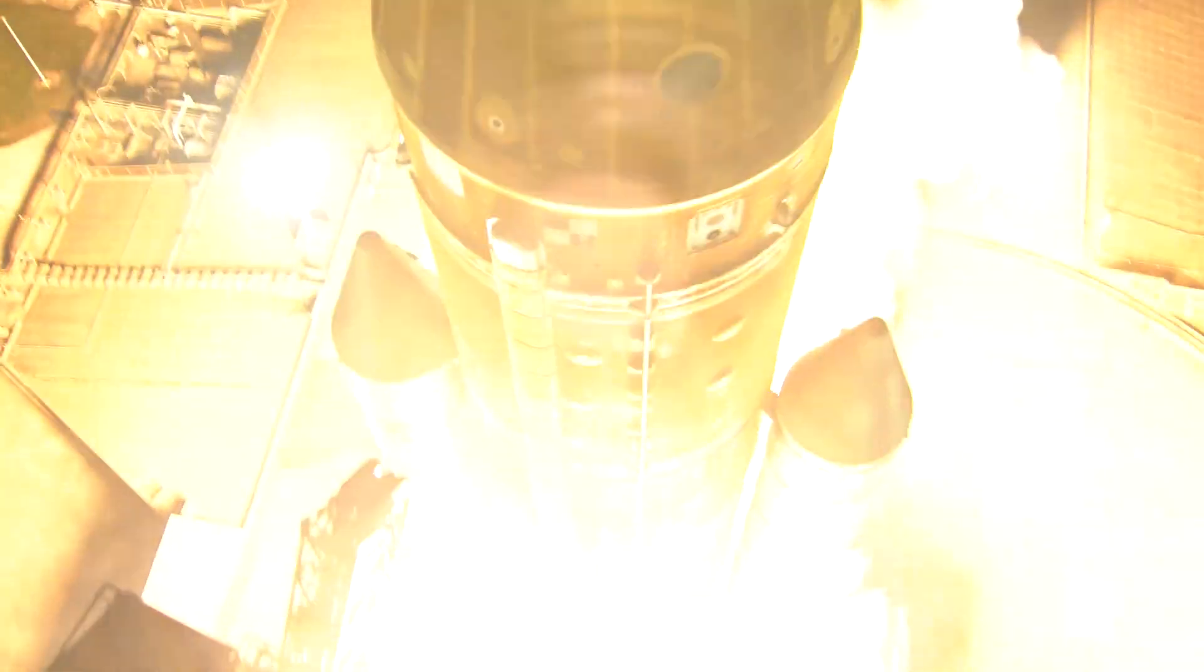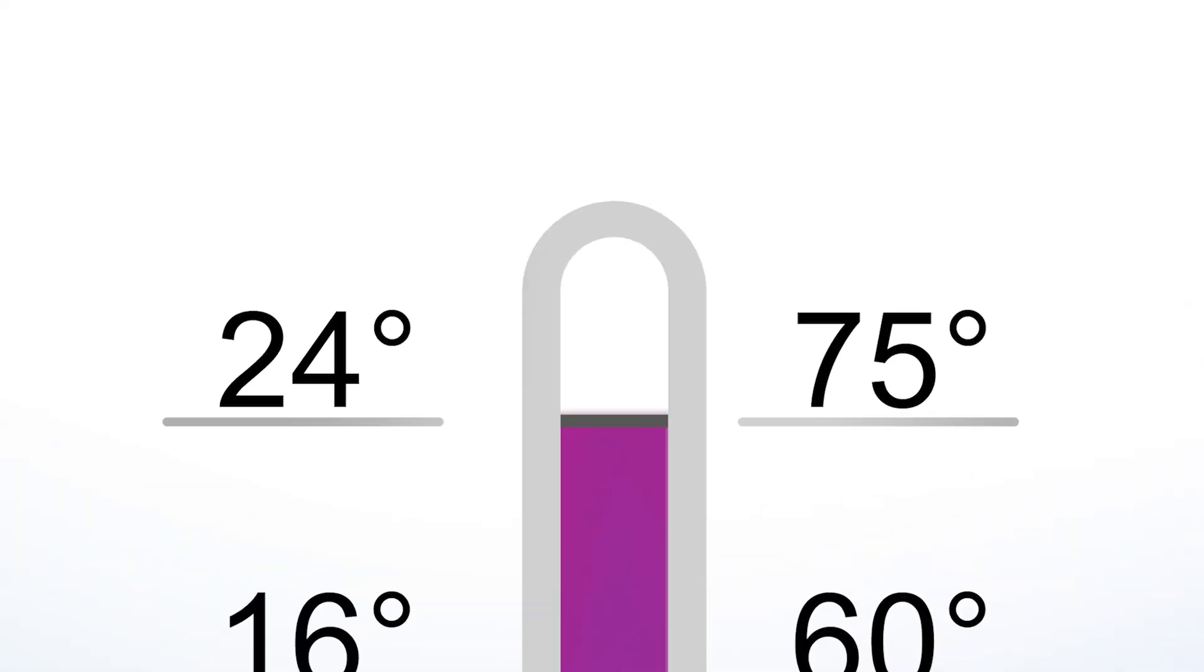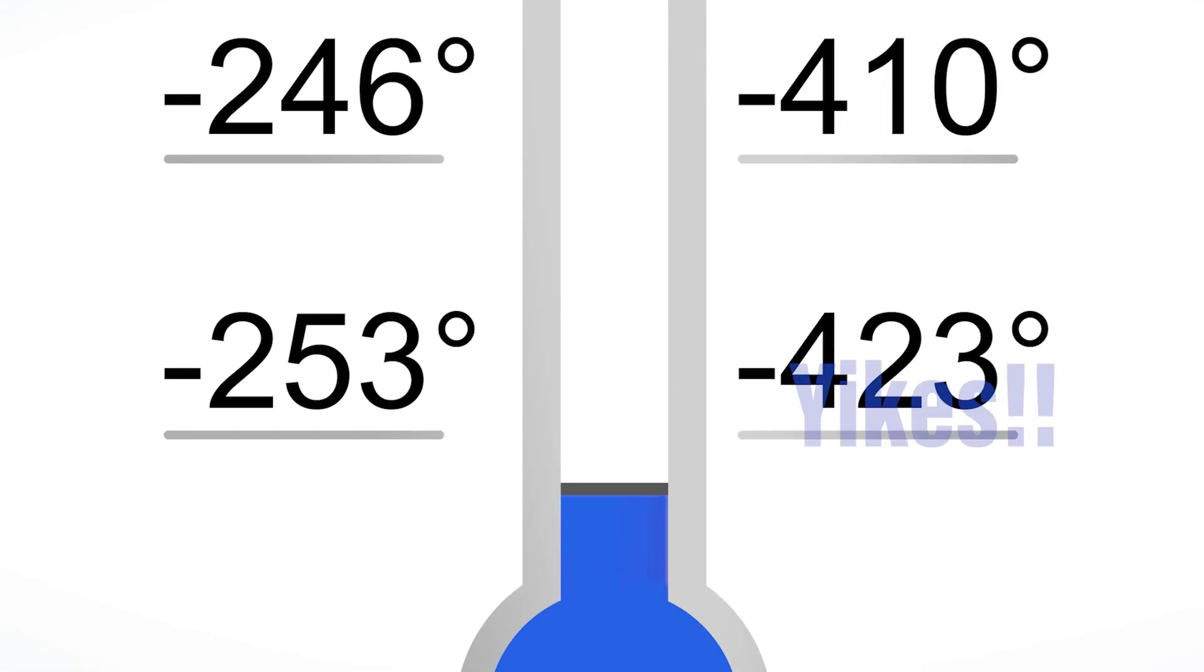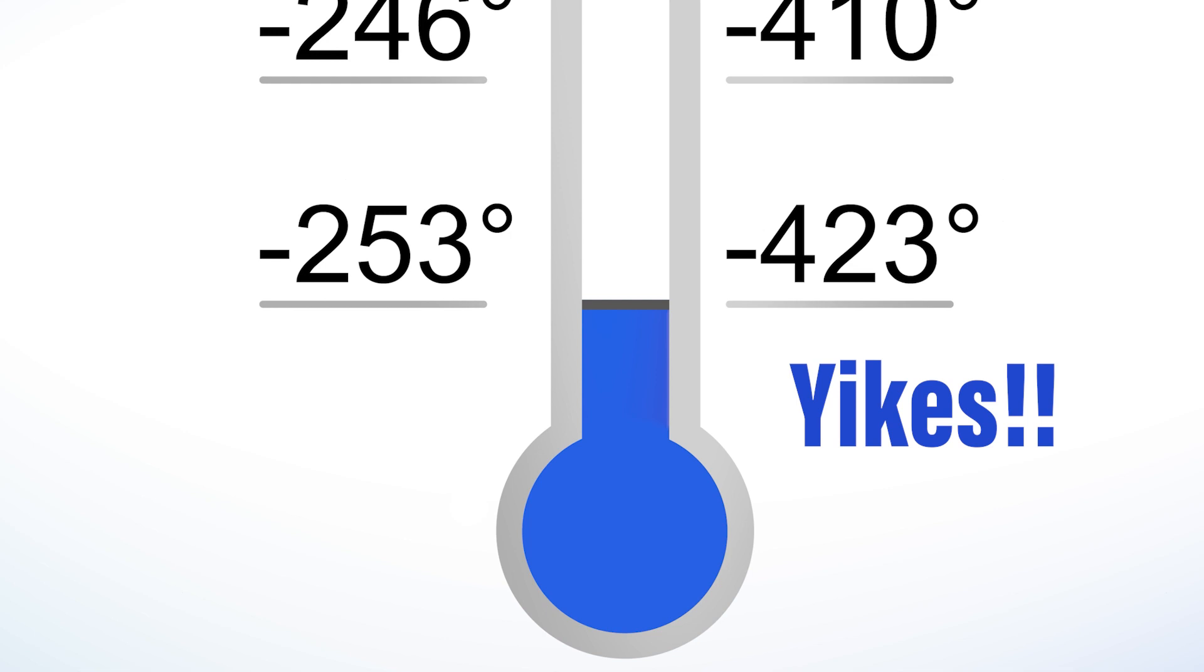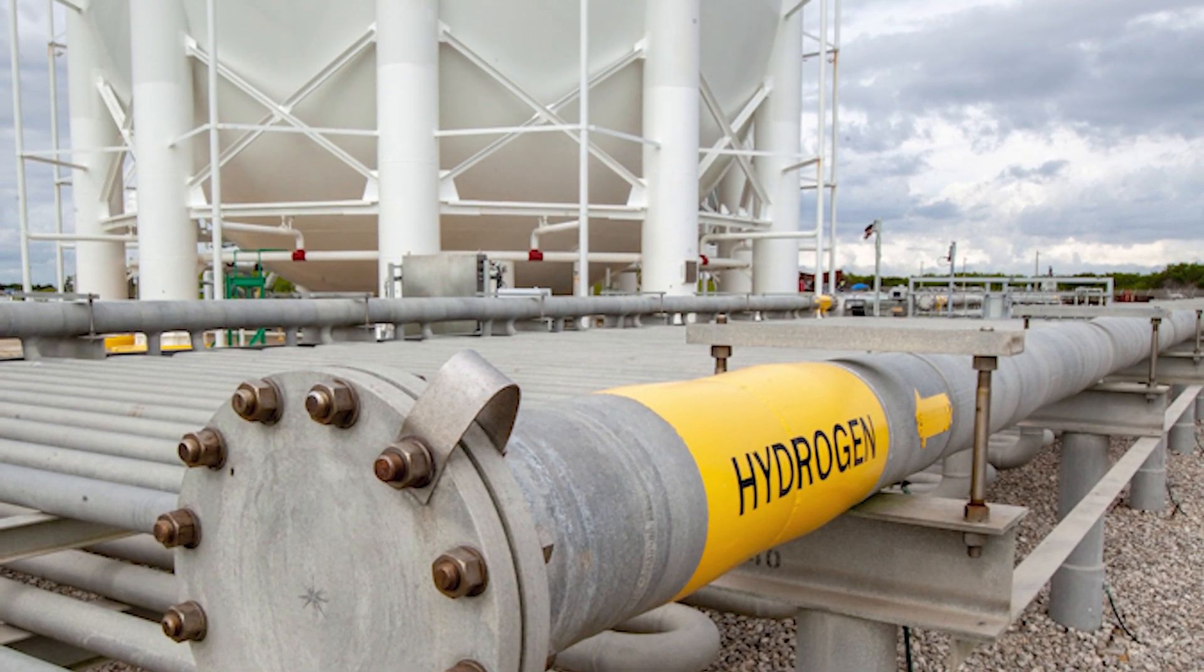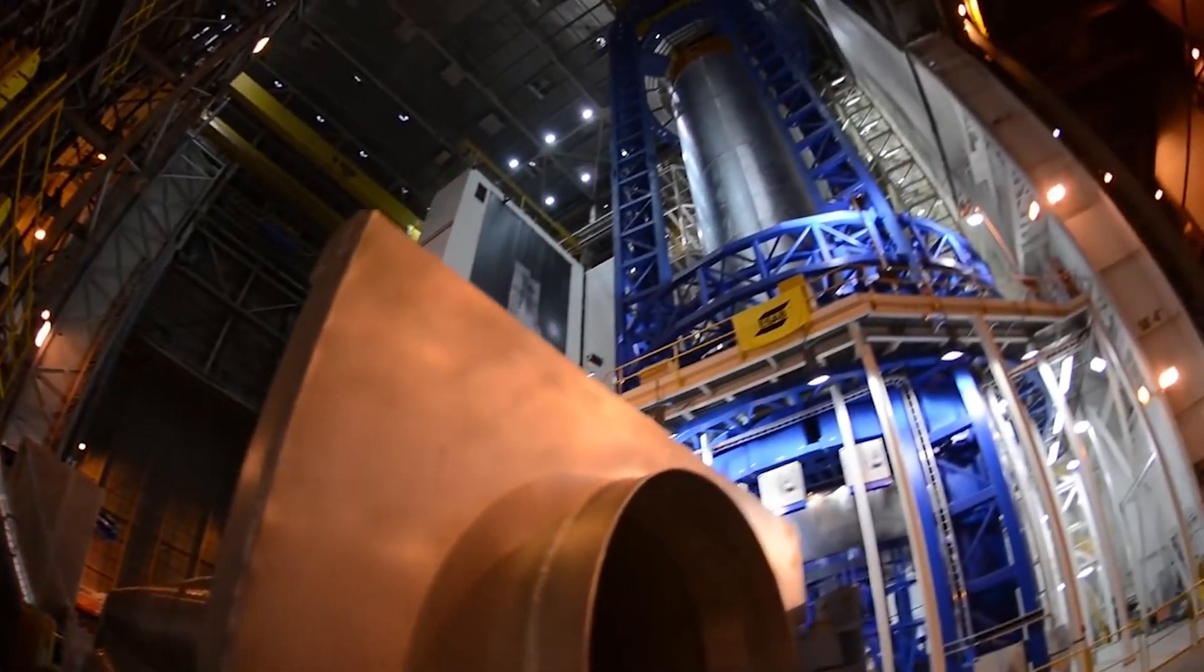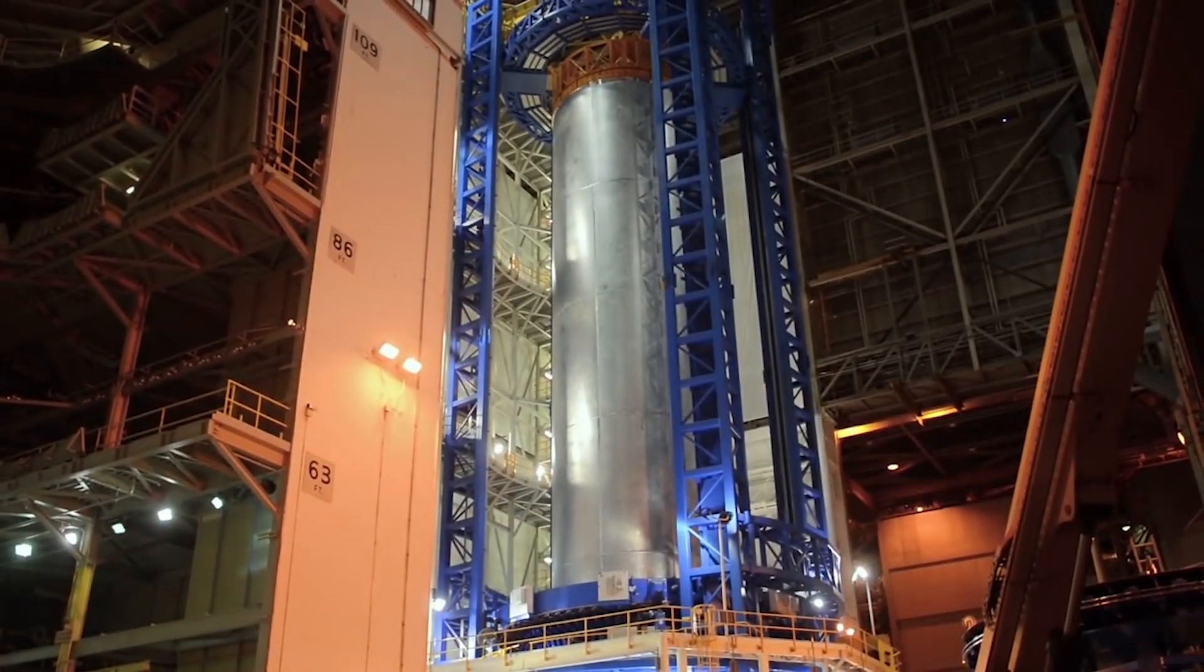Cryogenic rocket fuel, that is. It's called cryogenic because it's extremely cold, down to minus 423 degrees Fahrenheit. Cryogenic rocket fuel is made up of liquid hydrogen and liquid oxygen. These liquids are stored in special tanks inside the rocket.